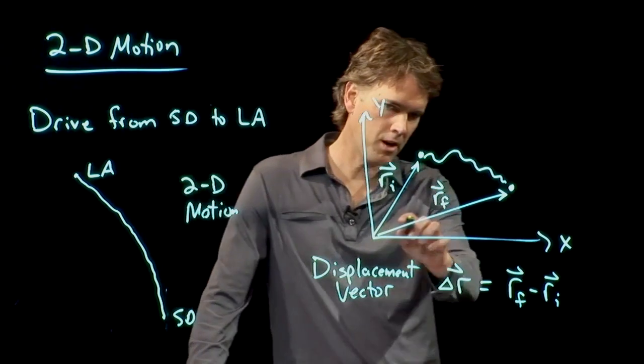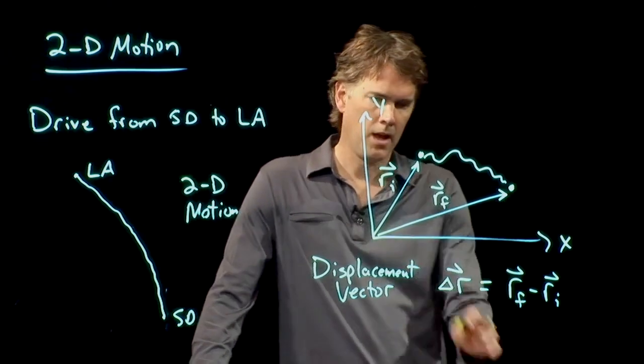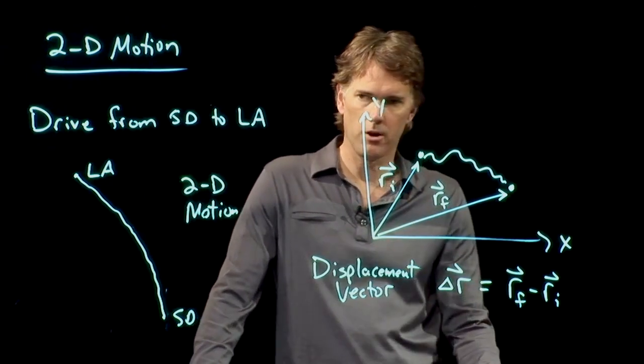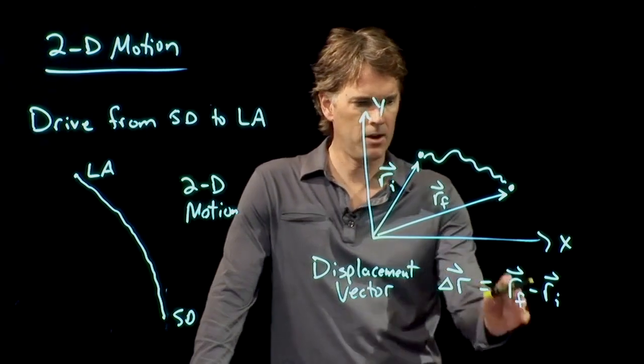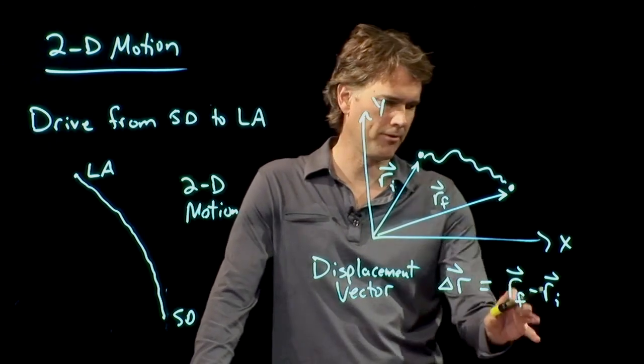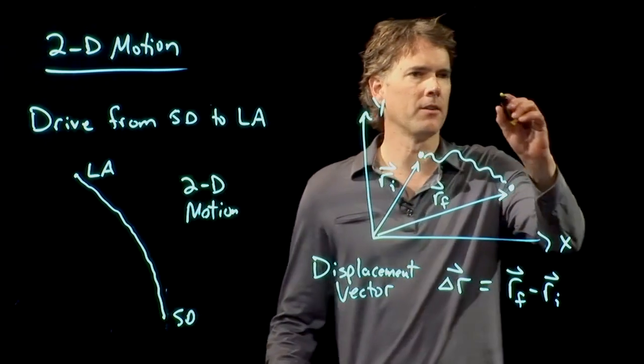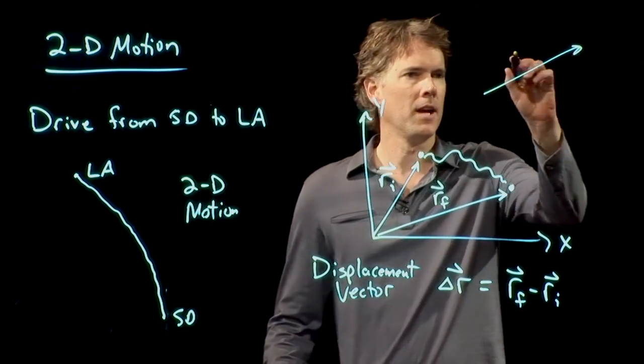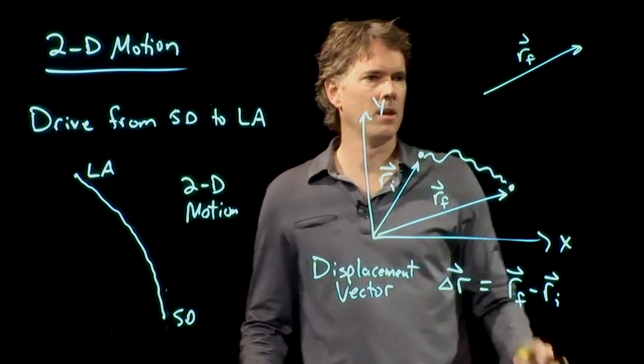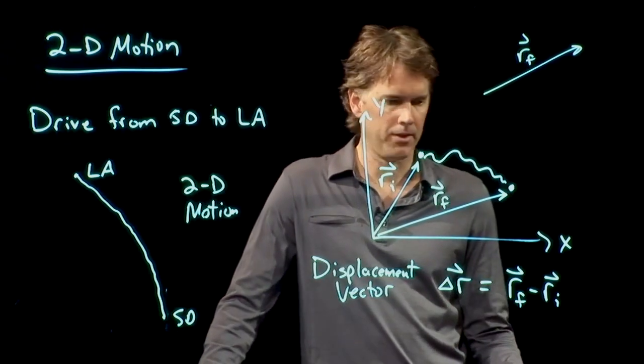So, how do we figure this out graphically? Well, remember, any time you have two vectors and you want to add them, you do the tip-to-tail method.